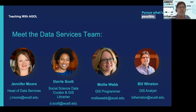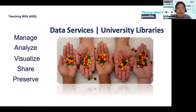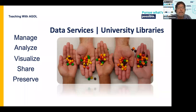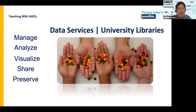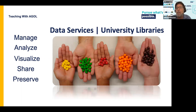The data services team is comprised of Jennifer Moore, who is our head; Dr. Doris Scott, our social science data curator and GIS librarian; Molly Webb, our GIS programmer; and I am Bill Winston, a GIS analyst. Data services is an arm of the university libraries. Our offices are in Olin Library on level A, and we provide services for managing, analyzing, visualizing, sharing, and preserving data. GIS is one of the things we provide a lot of support for.